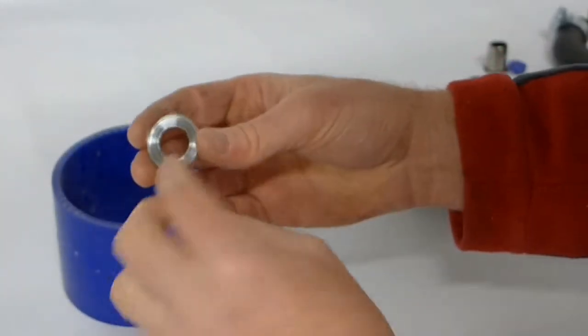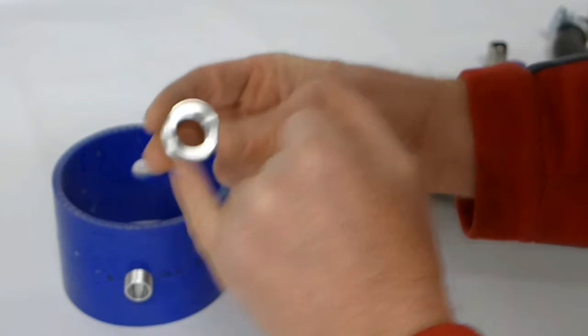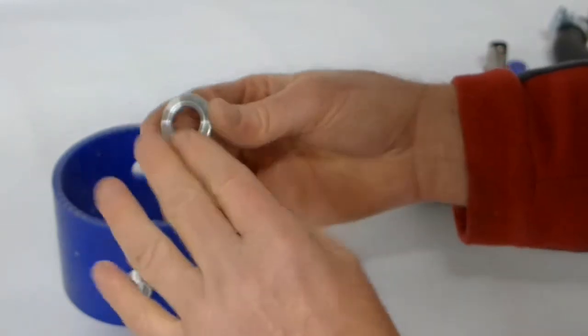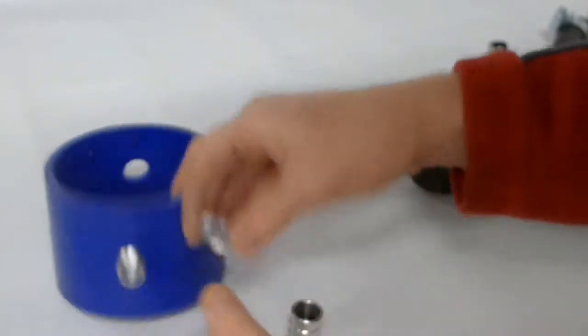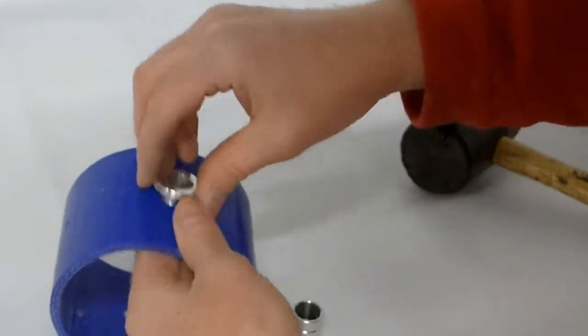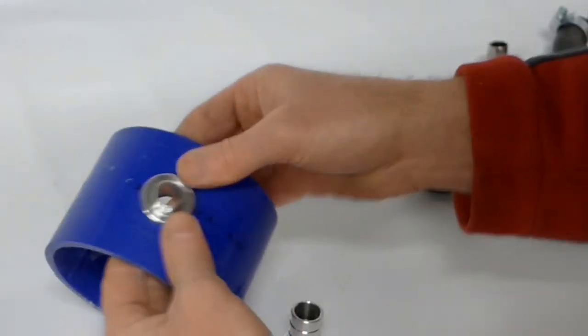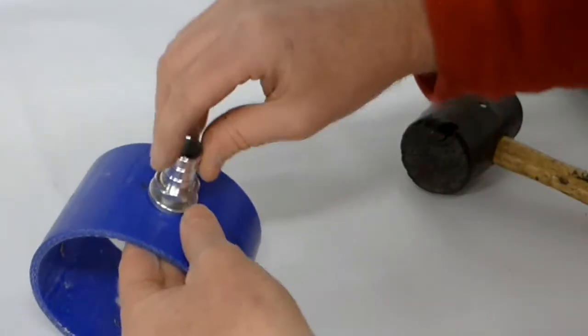Now the special pressure washer has two faces, this stepped inner face and a smooth outer. So the stepped inner face always goes towards the material, i.e. the hose, followed by the barbed outlet.